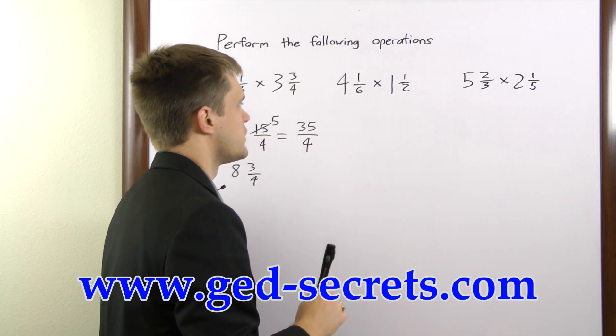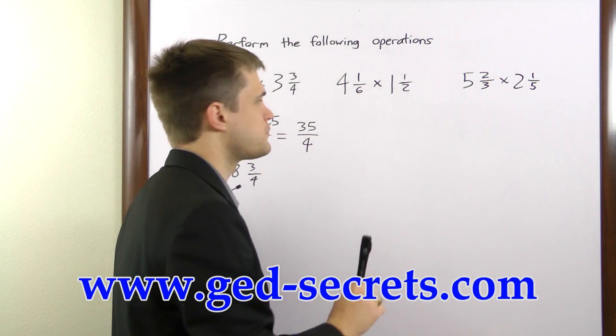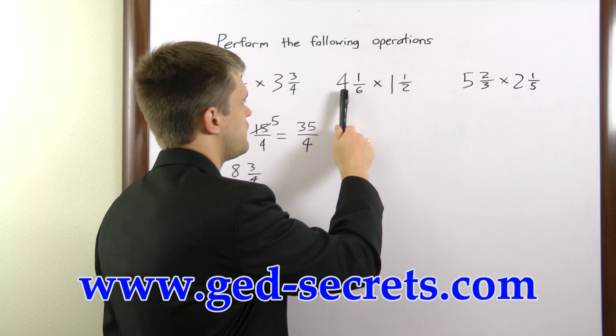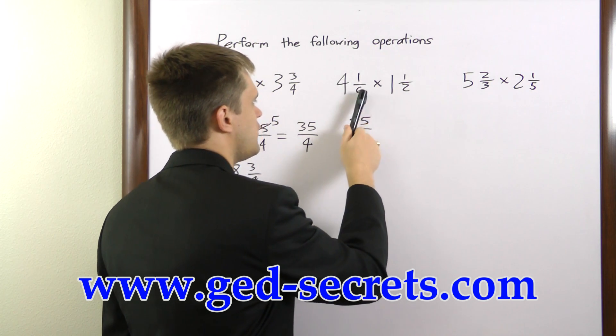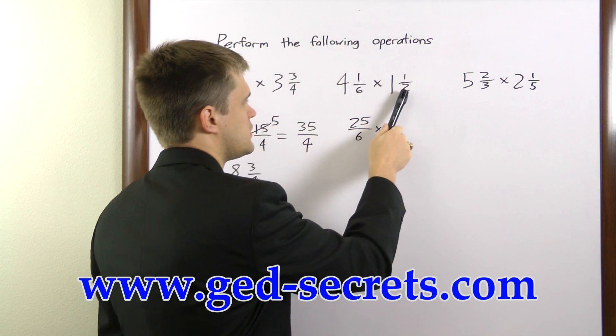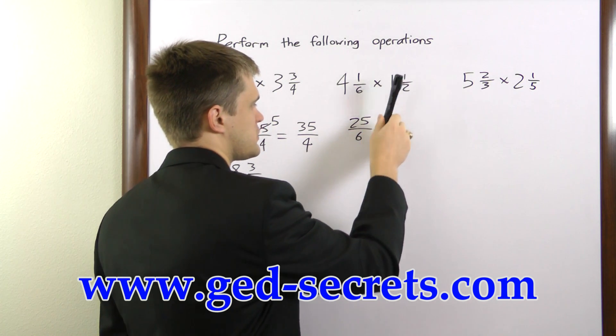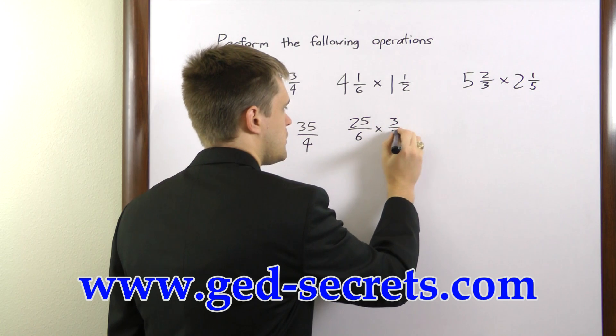In the second example, we have 4 and 1 sixth times 1 and 1 half. 6 times 4 is 24, plus 1 is 25, so we have 25 over 6 times 2 times 1 is 2, plus 1 is 3. 3 over 2.